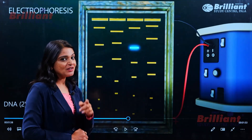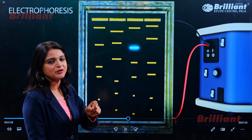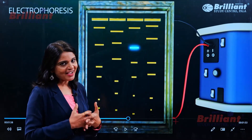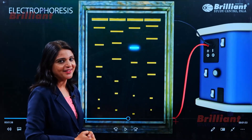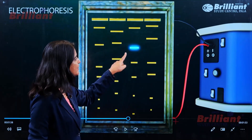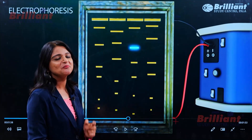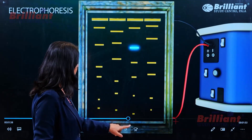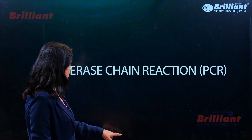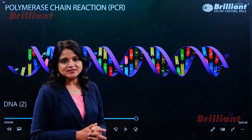Here you can see a radio-labeled probe coming and binding with the complementary base. Among the different fragments, I have identified which one is my desired fragment. Now I'm going to amplify this particular desired DNA fragment using PCR.